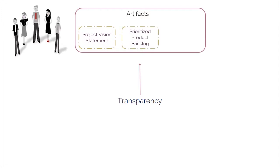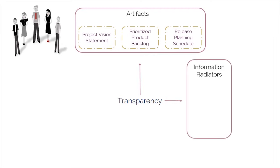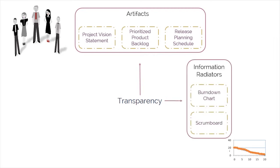Transparency is also provided by the prioritized product backlog with user stories that can be viewed by everyone both inside and outside the team, the release planning schedule which may be coordinated across multiple Scrum teams, and information radiators such as the Scrum board and burndown charts, which make a team's progress clearly visible to all.